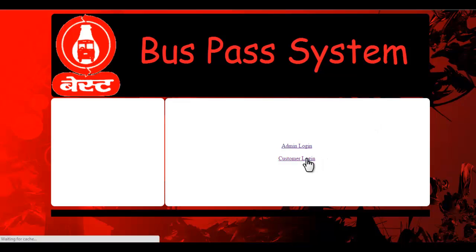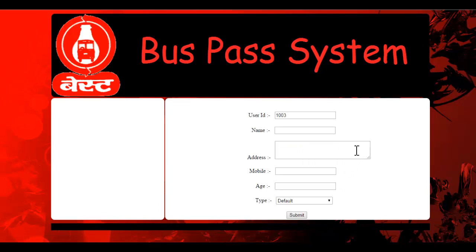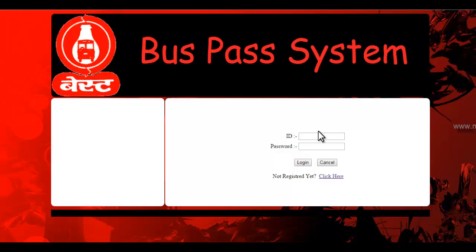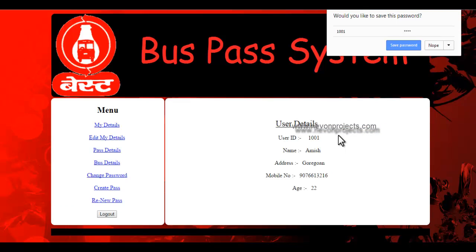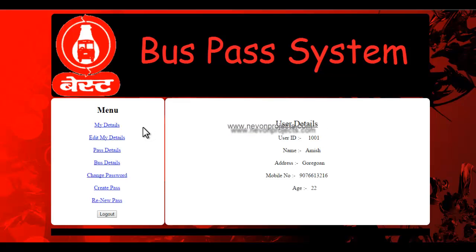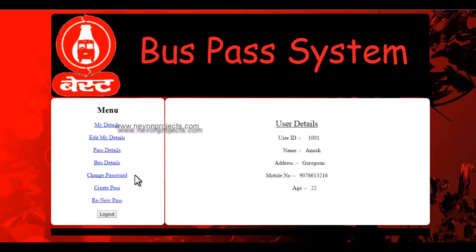This is the customer login. If you don't have an account, you can just click here and create one. So I have an account — let's enter the username and password. This shows my details which I entered during registration. From here I can edit my details, view my pass details, view bus details, change my password, and create or renew a pass.